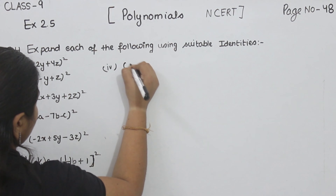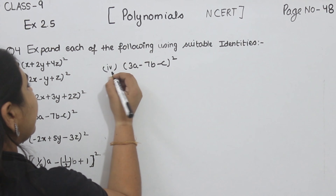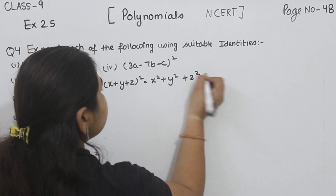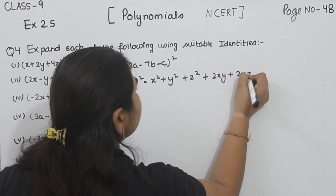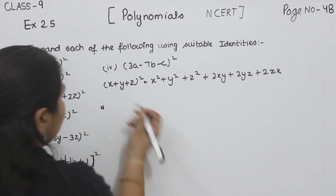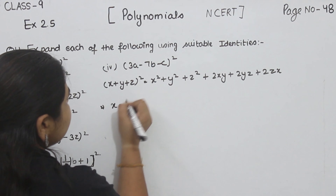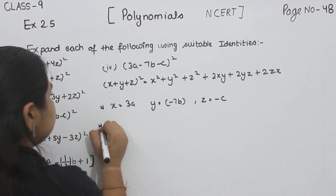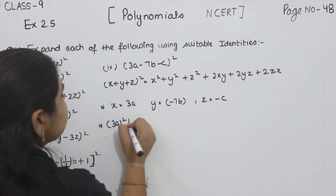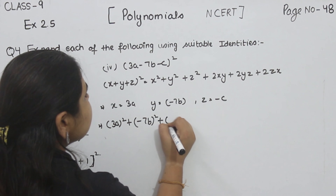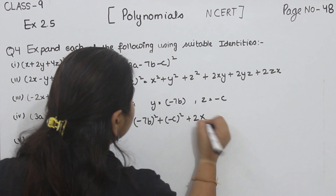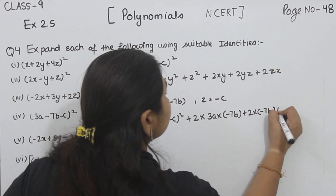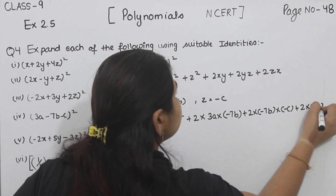Part 4: 3a minus 7b minus c, whole square. We are going to use the identity X plus Y plus Z whole square is equal to X square plus Y square plus Z square plus 2XY plus 2YZ plus 2ZX. At the place of X we put 3a, at the place of Y we put minus 7b, and at the place of Z we put minus c. Now: X square plus Y square plus Z square plus 2XY plus 2YZ plus 2ZX.